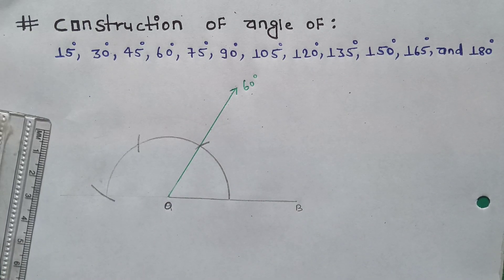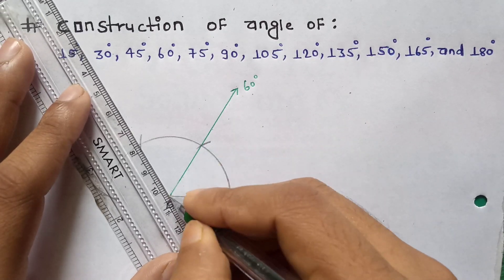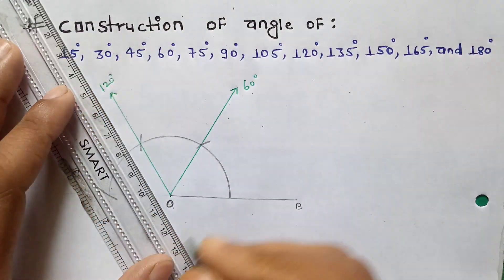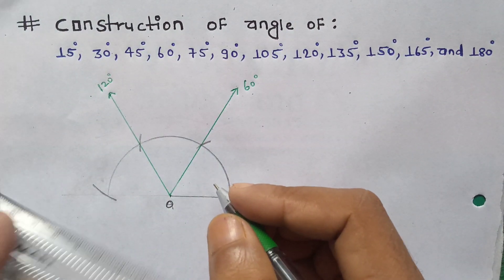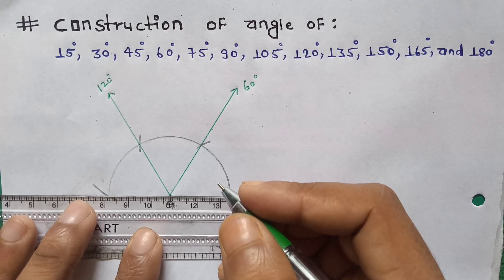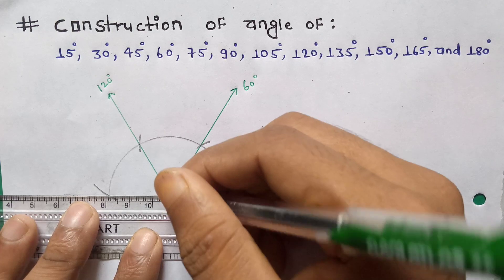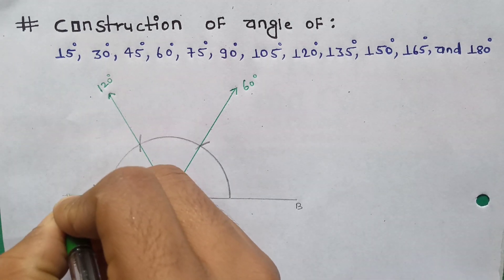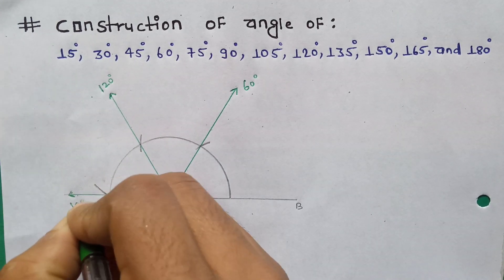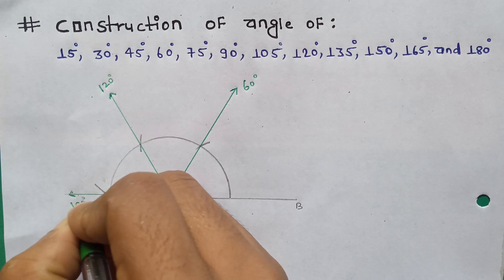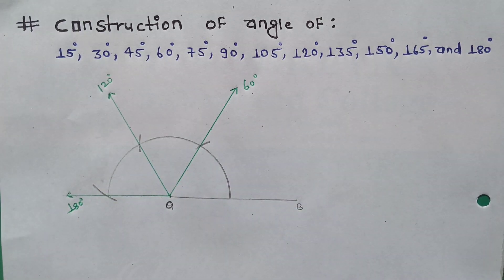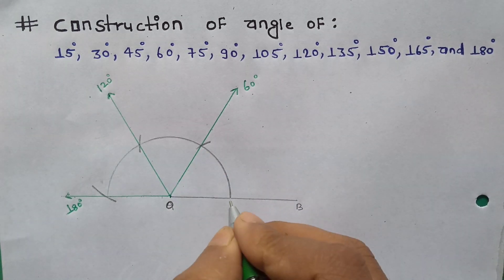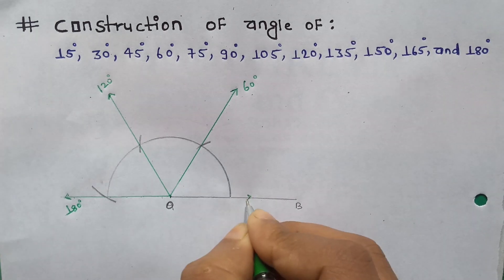Now I am going to pass the line from 120 degrees — this is 120 degrees. The last one is 180 degrees, so I am going to pass the line from 180 degrees. I pass the line from point O. It is 180 degrees. So there is no confusion in 60 degrees, 120 degrees, and 180 degrees. This point is always 0 degrees — just remember that.